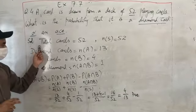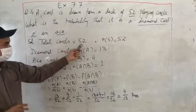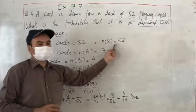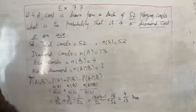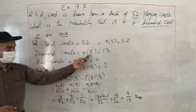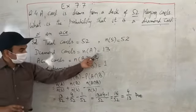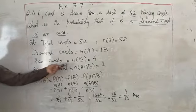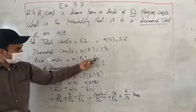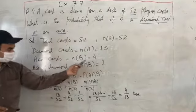Starting our solution, we know that total cards of 52, that is N of S, that is number of sample space items, is equal to 52. Diamond cards, yesterday we came to know there are 13 diamond cards, so N of A is equal to 13. Ace cards, also came to know yesterday that there are total 4 ace cards.